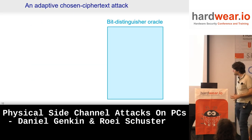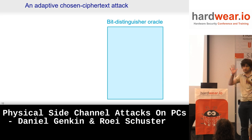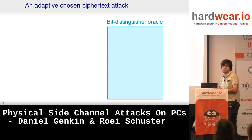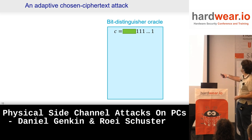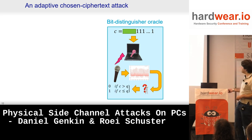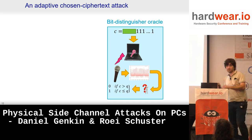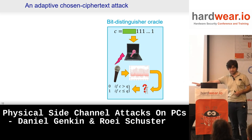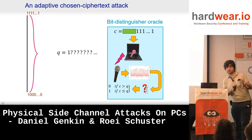I'll call this the bit distinguishing oracle. What does this box do? It takes in a ciphertext with a specific condition where it must end with ones, runs it through decryption, analyzes the signal, and outputs: if the ciphertext is larger than Q, we get a zero; if the ciphertext is smaller than Q, we get a one. The purpose is first to show that if I have this box, I can extract the key — and second, to build that box. So if I have this magical box, I can extract the key. Why? Let's do a binary search on Q.